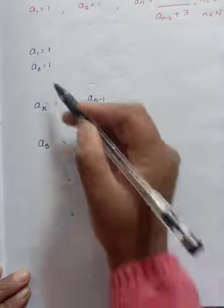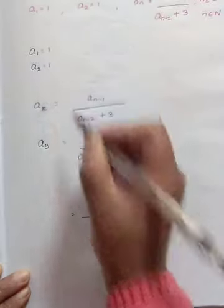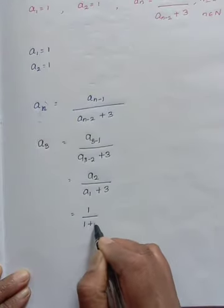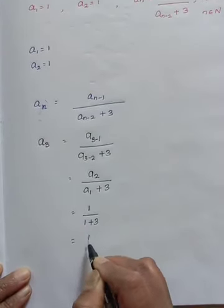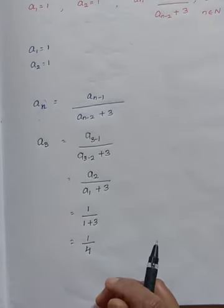We know that A2 value is 1 divided by A1 value is 1, plus 3. That is 1 by 4. So A3 value is 1 by 4.